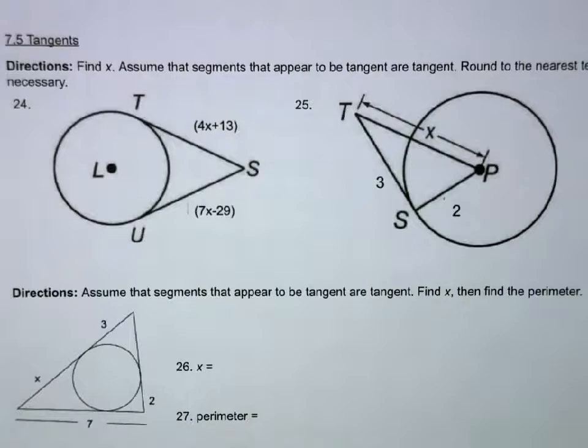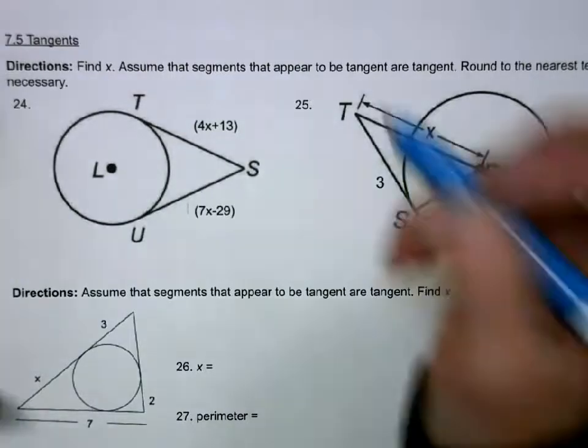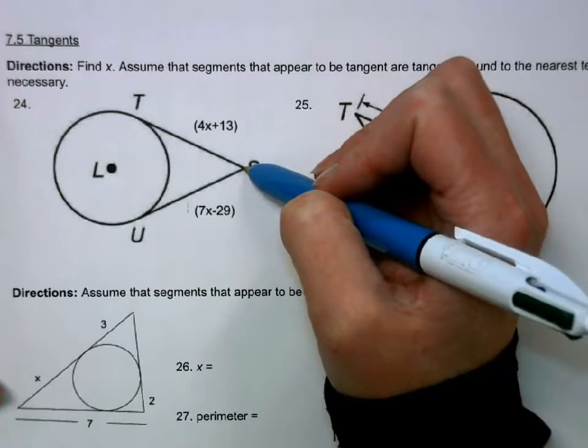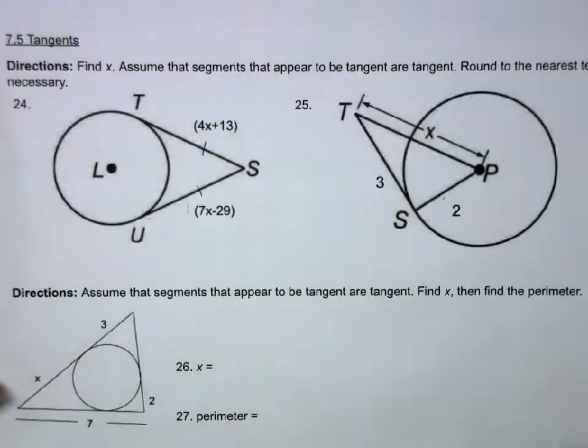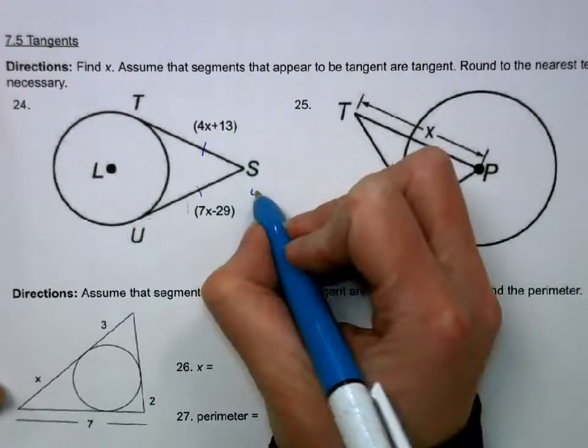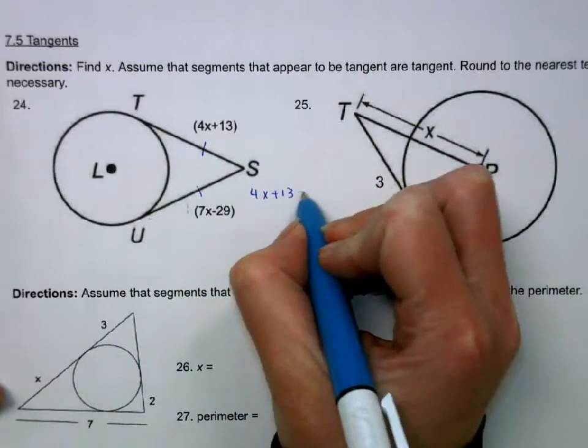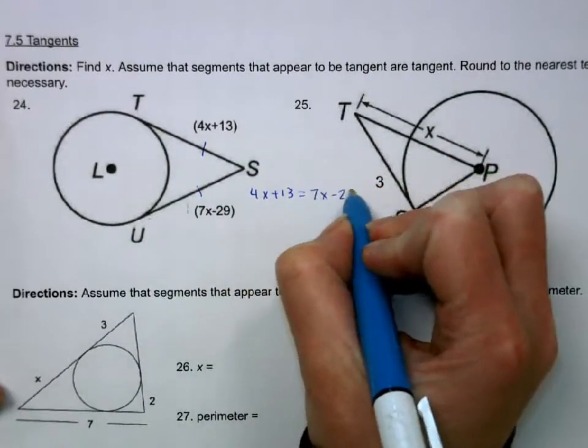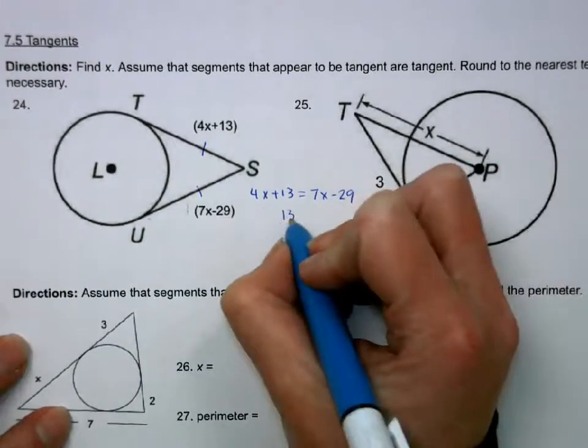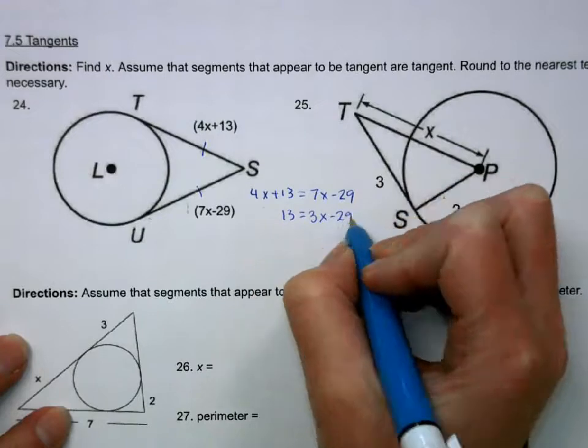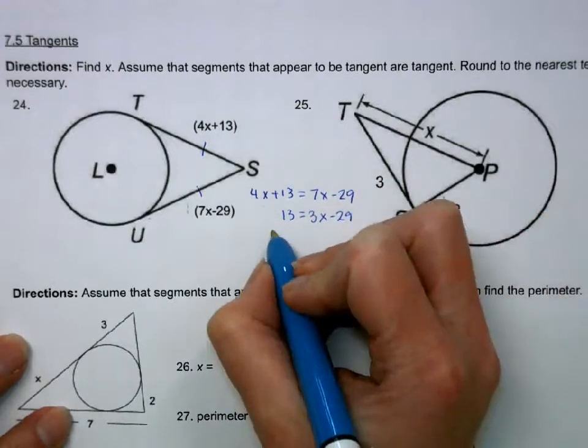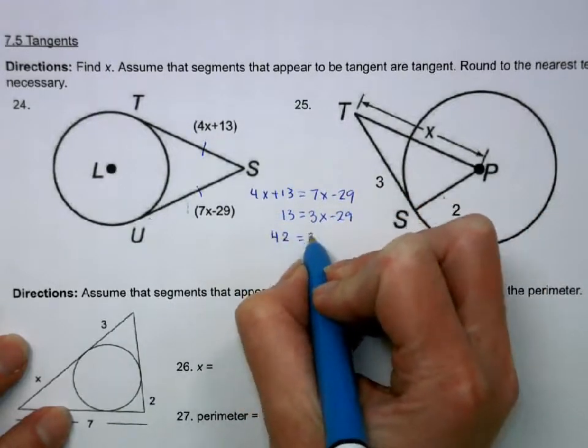And now we're going to talk about tangent lines. So one property of tangent lines is if you have two tangent lines from the same point, they must equal each other. So we'll set 4X plus 13 equal to 7X minus 29. Subtract 4X.